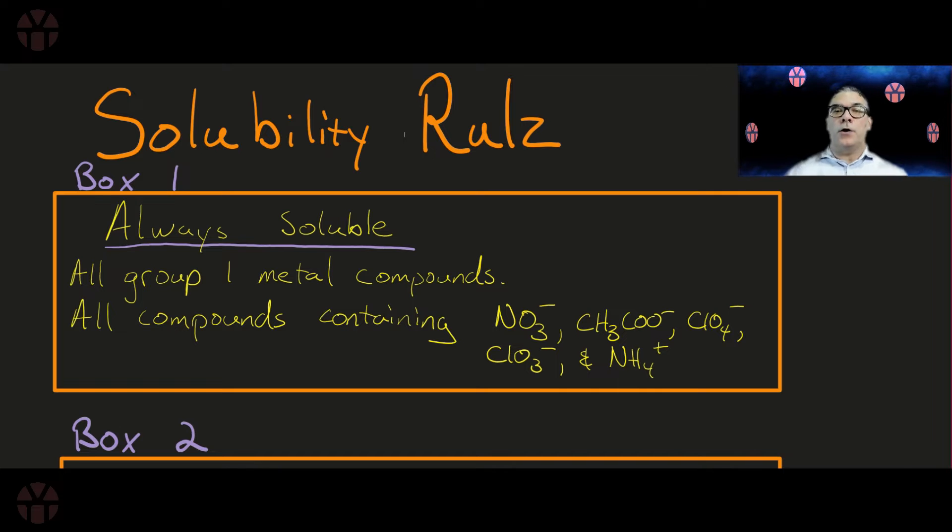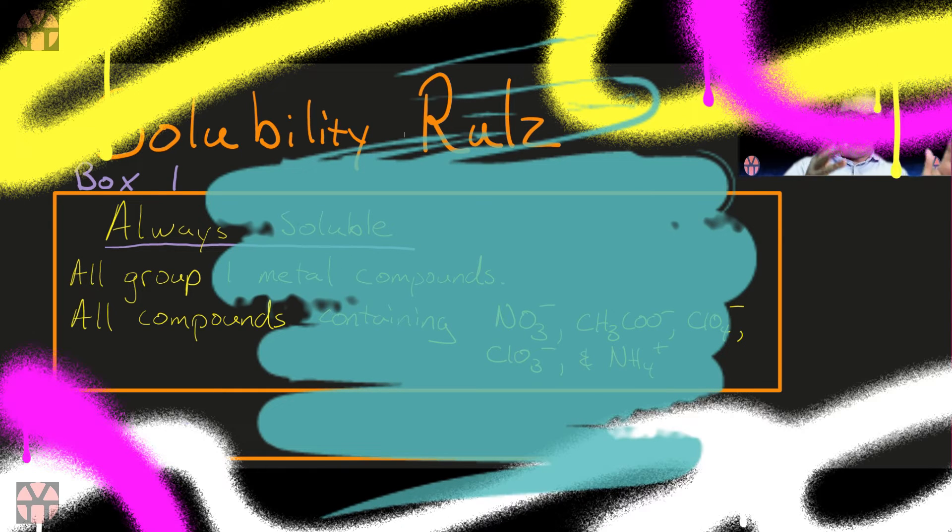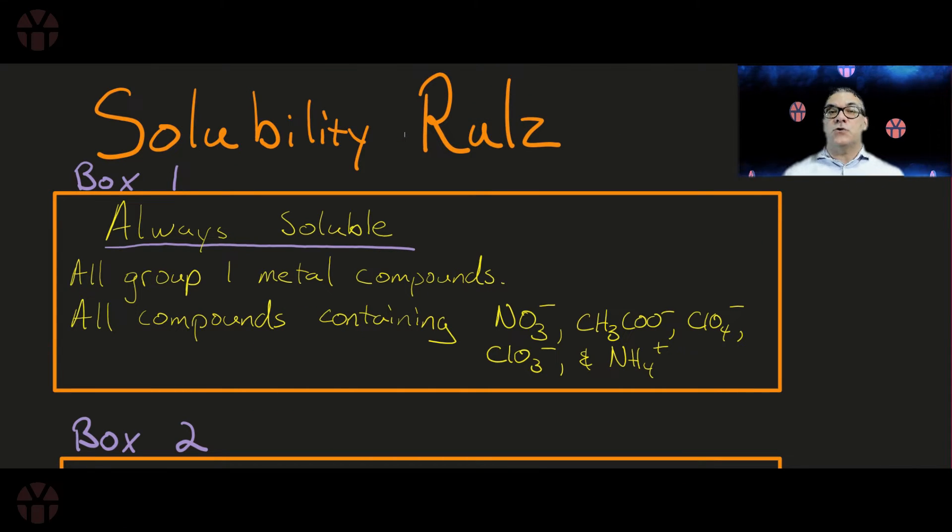Any compound that contains one of those group 1 metals and whatever else is always going to be soluble in water. Now please, before we go any further, understand that I am painting with a very large brush. That means that these are broad strokes. I can always find an exception for any one of these boxes or any one of these rules, but for the most part you'll probably be okay if you see a group 1 metal compound soluble in water.